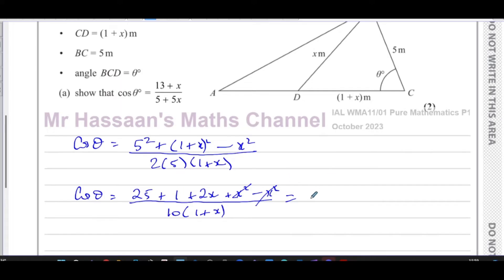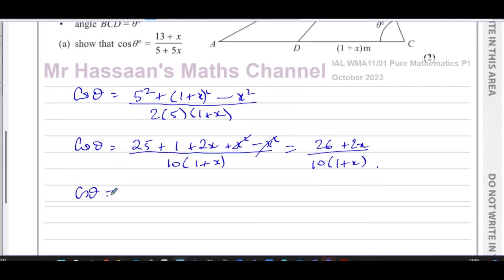This gives you 2 times 5, which is 10. In fact, I'm going to leave this as 10 times 1 plus x for now because we'll see if anything cancels out. Leave it like this first and then cancel out and then expand at the end if necessary. So here x squared cancels with x squared. You got 25 plus 1, which is 26. So that's 26 plus 2x over 10 times 1 plus x. We can say cosine theta is equal to, there's a common factor of 2 on the numerator. So 2 times 13 plus x over 10 times 1 plus x. The 2 cancels with the 10 giving you 5 underneath. So you're left with 13 plus x over 5 times 1, which is 5, and 5 times x, which is 5x.